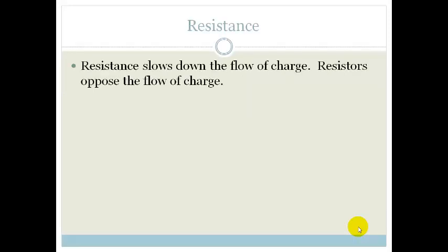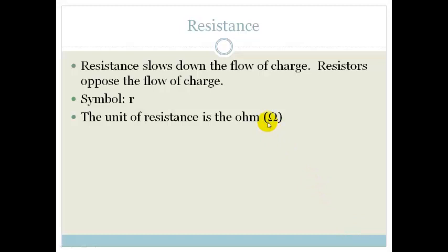So resistance slows down the flow of charge. Resistors officially oppose the flow of charge, so anything that opposes the flow of charge is called a resistor. The symbol is a little r, and the unit of resistance is the ohm, and that little funny thing over here is the omega, which is the symbol for the ohm. It is defined as a volt per ampere.